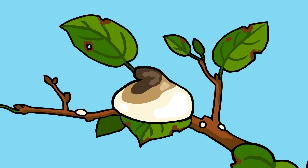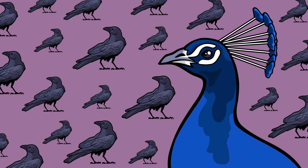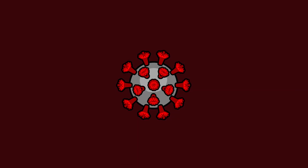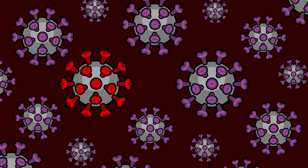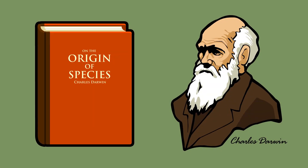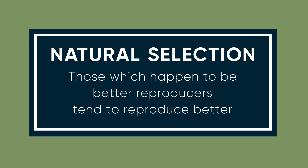Let us test drive this new bumper sticker with some real world questions. First off, why are there more crows alive today than peacocks? Because those birds which happen to be better reproducers tend to reproduce better. Why is a new coronavirus strain becoming more common than the original coronavirus strain? Because again, those viruses which happen to be better reproducers tend to reproduce better. That is it. Obviously it does require serious research to uncover the details allowing one bird species or one virus strain to reproduce better than another, but our seemingly silly bumper sticker does point our brains in the right direction — no fluff, no distractions. Those which happen to be better reproducers within a specific environment tend to reproduce better within that environment.